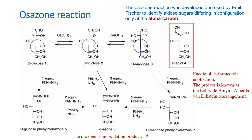Another important thing to remember about osazone is that this is an oxidation product, and in this reaction aniline and ammonia are also formed. This aniline and ammonia formed is actually the reduction product of one of the phenylhydrazine units. There are three equivalents of phenylhydrazine used: one equivalent is to form phenylhydrazone, and the second equivalent is a reaction where one of the phenylhydrazine units is reduced.